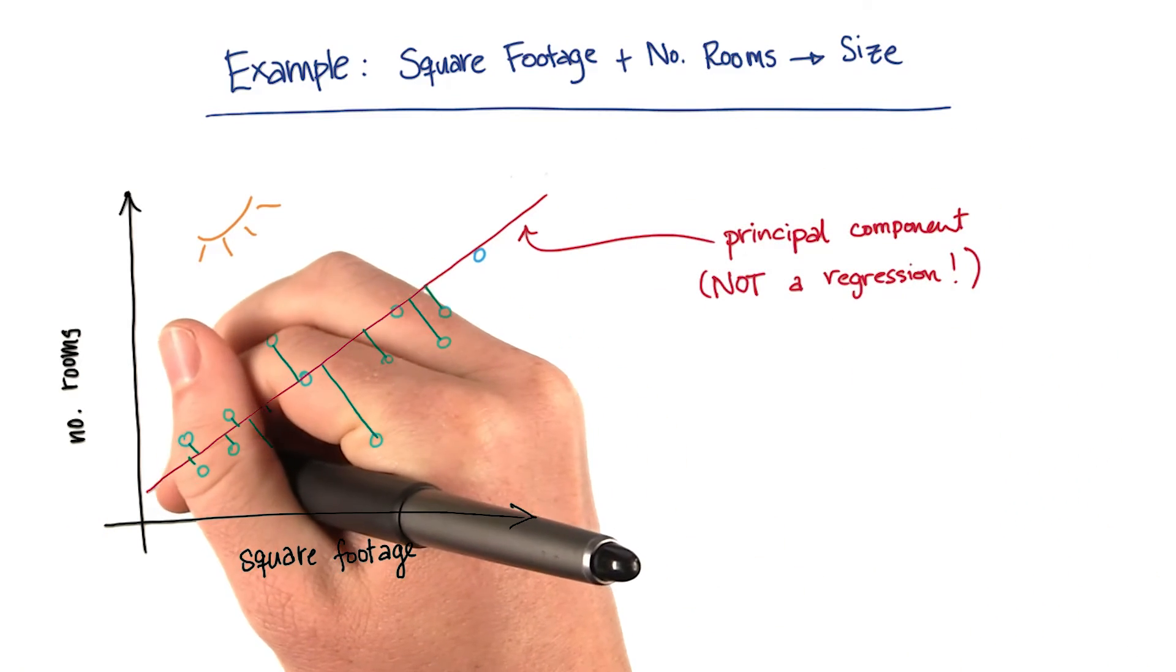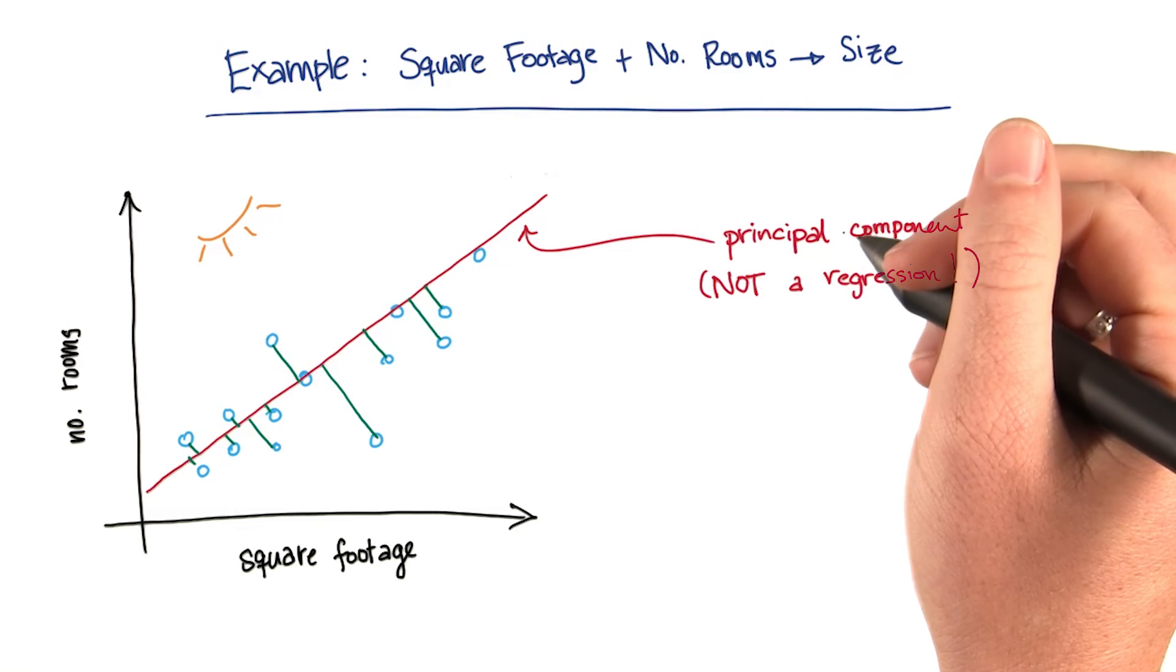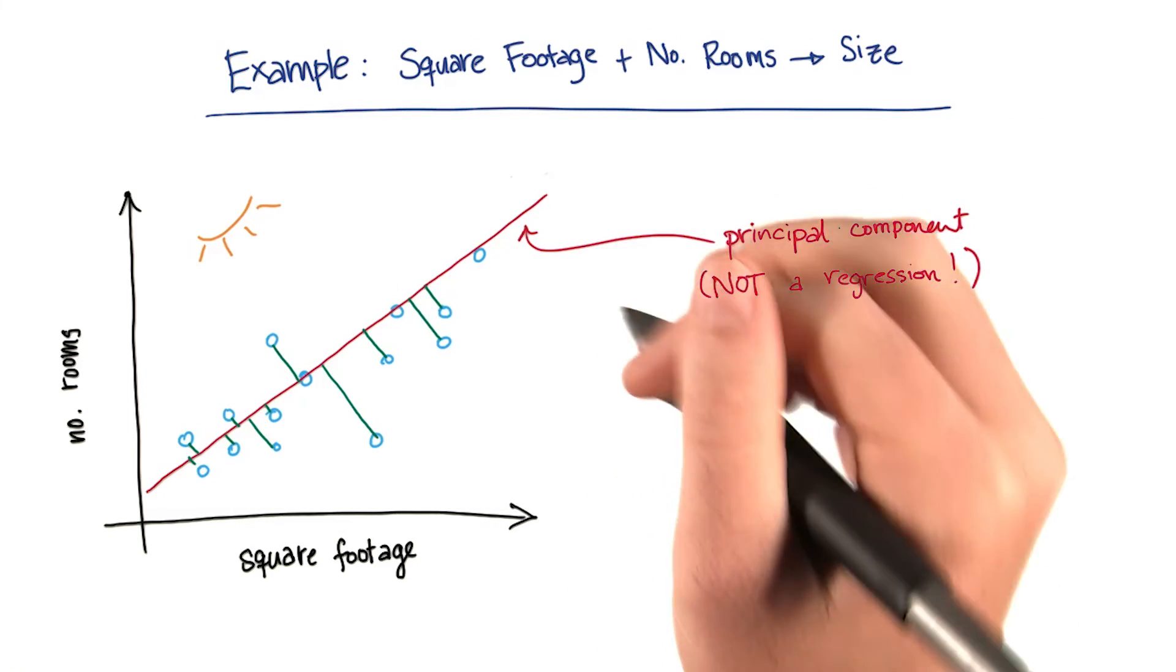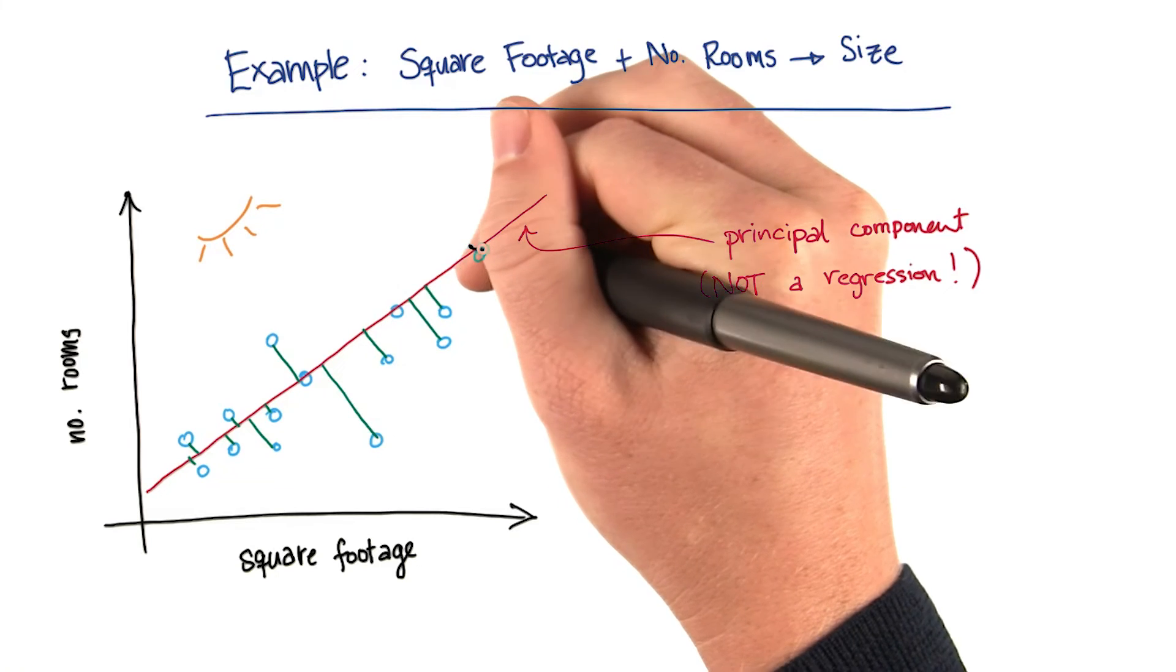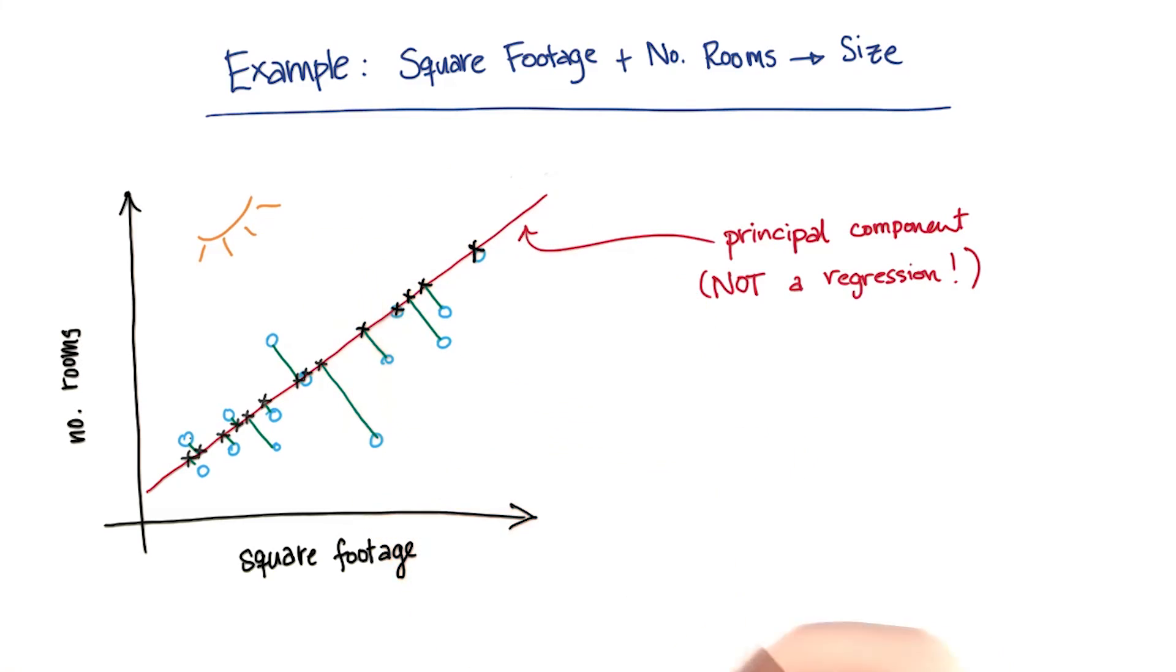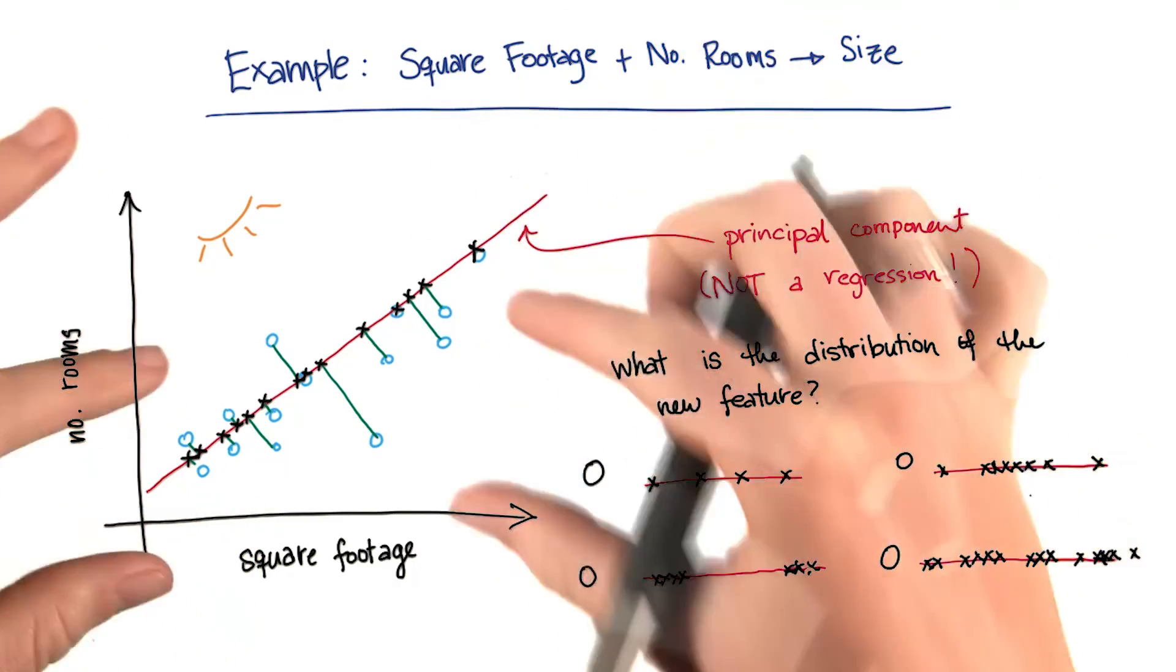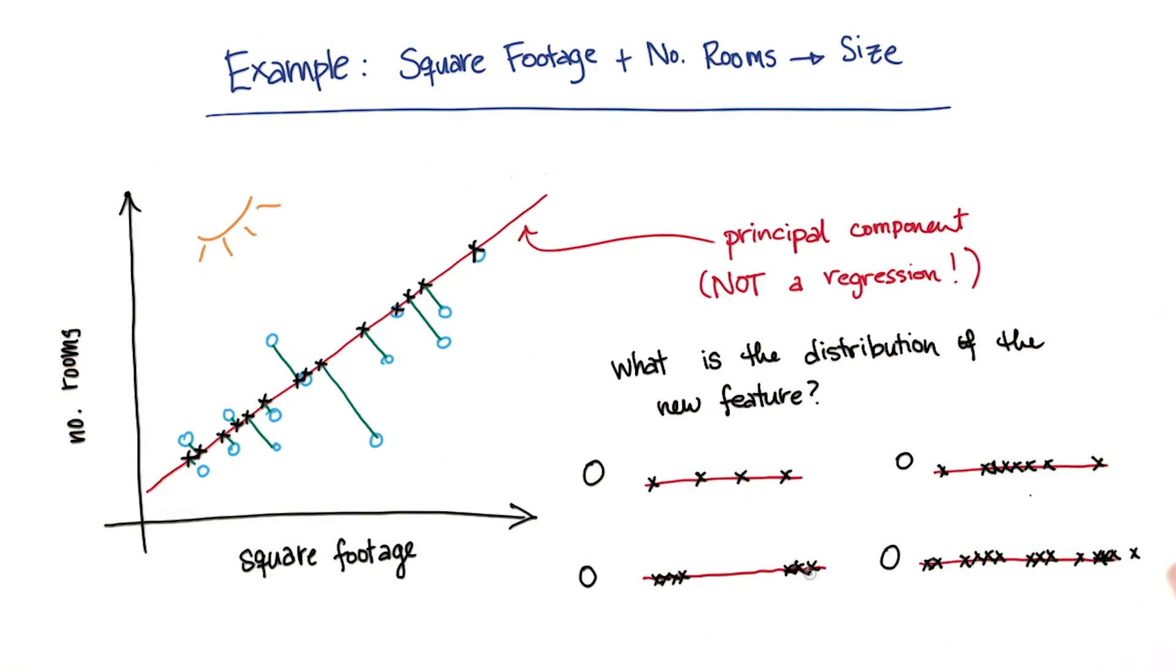Now my principal component looks like this. So I started out with two dimensional data, but once I projected it down onto the principal component, it's in one dimension. And it's going to look something like this. Now, instead of being the blue circles, my data is going to be the black x's. I've turned it into a one dimensional distribution. I've just taken the feature that I've made in this diagram and sort of turned it so that it's lying flat.